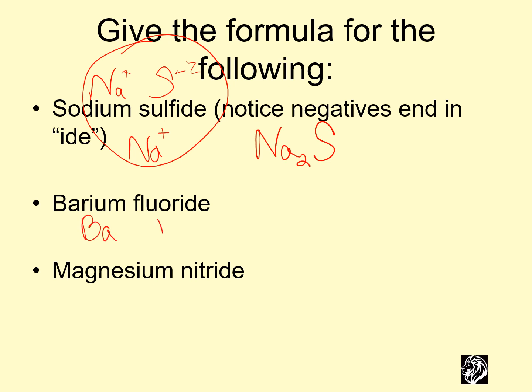Barium is Ba. Fluoride is F. Barium is in the +2 column. F is in the -1 column. We need another one, so it's going to be BaF2.